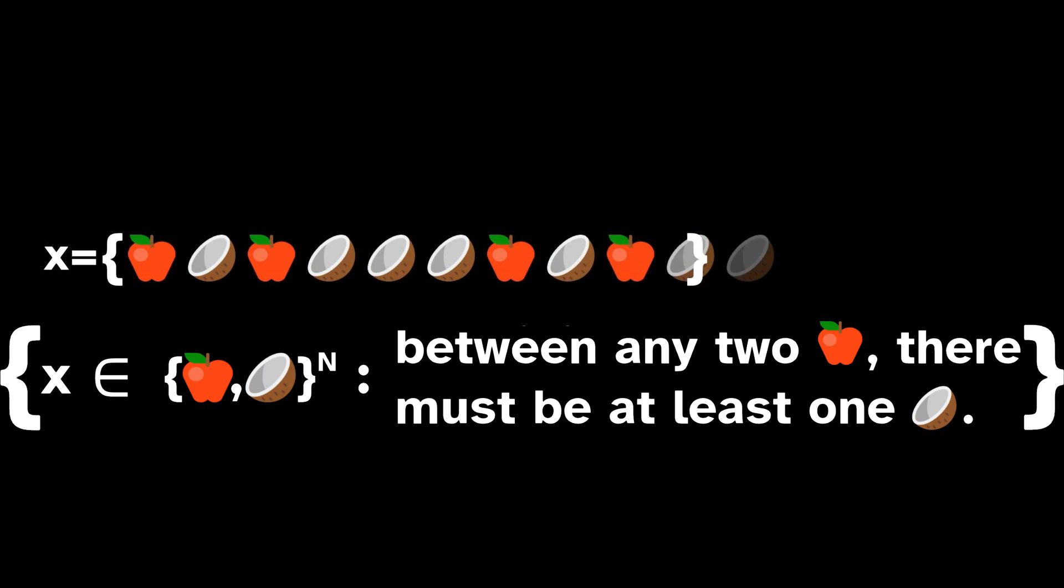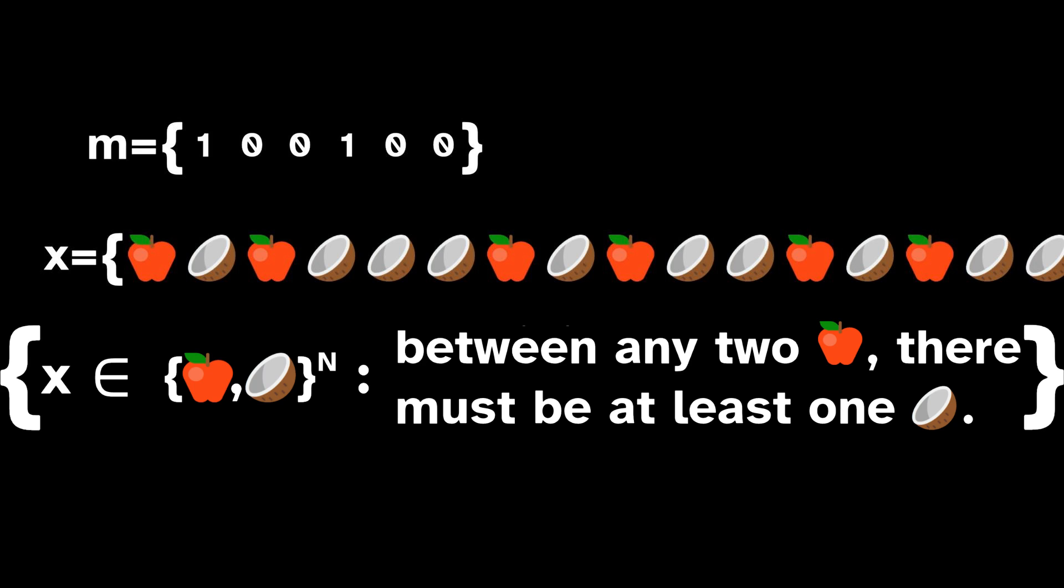If I use these two symbols and define a subshift over this alphabet according to the rule between any two apples there must be at least one coconut, do you recognize this subshift? This is actually just the golden mean shift from earlier, but written in different terms.